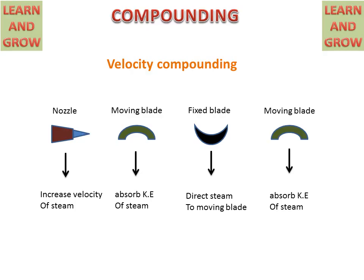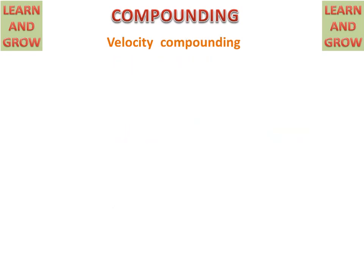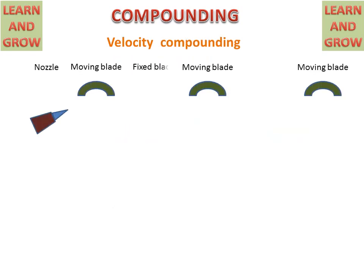Now we discuss the velocity and pressure graph for velocity compounding. In velocity compounding, the arrangement of components is: firstly a nozzle, then a moving blade, then a fixed blade, then a moving blade, then a fixed blade, and then a moving blade. These are the stages of velocity compounding.